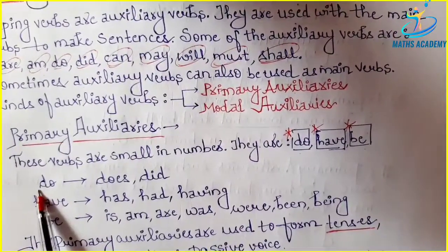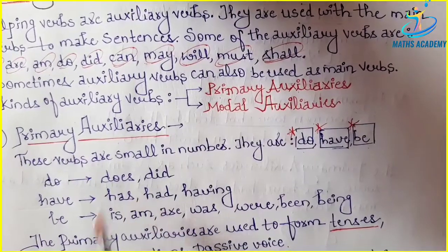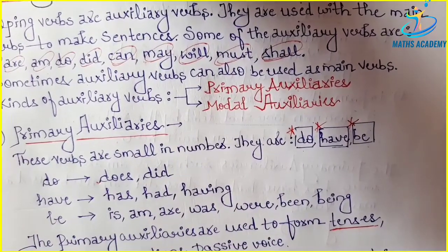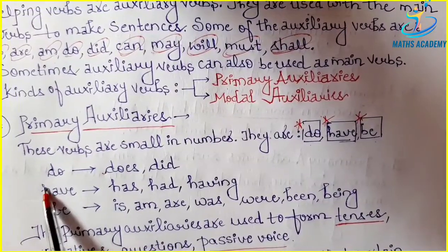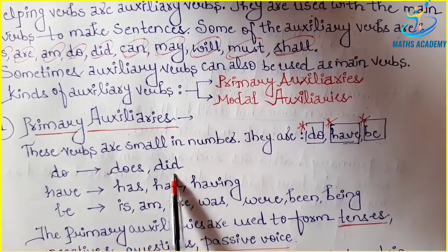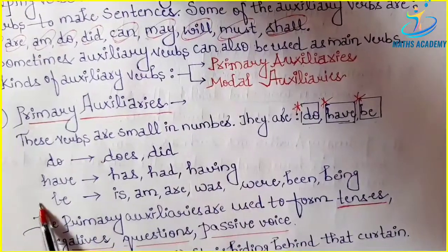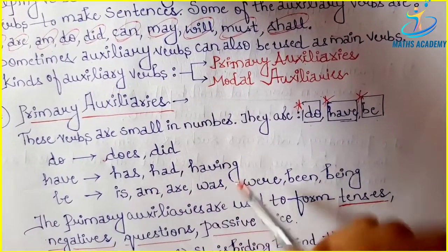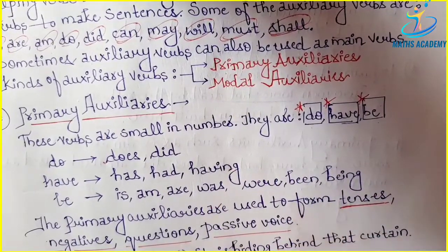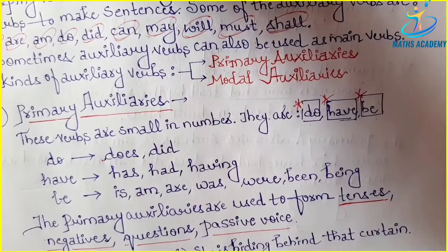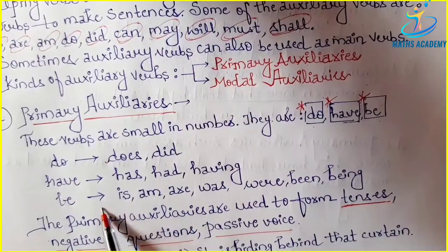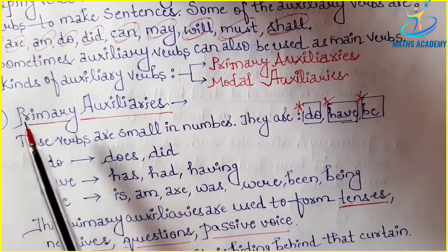Do can be used with past tense or future tense — we have to change the tense of this verb. So do changes to does or did. Have changes to has, had, or having. Whatever tense type it may be — past tense, present perfect, past perfect, present continuous — we use the verb accordingly.